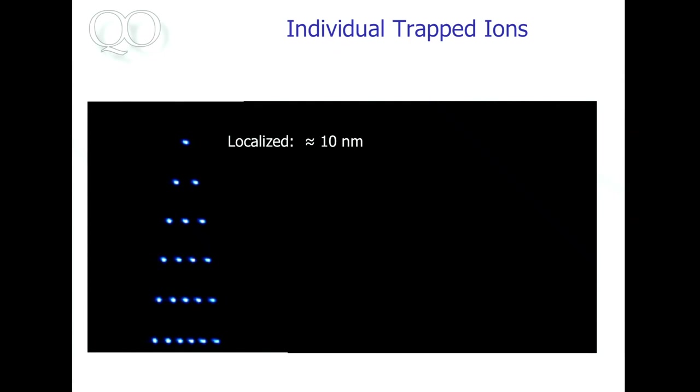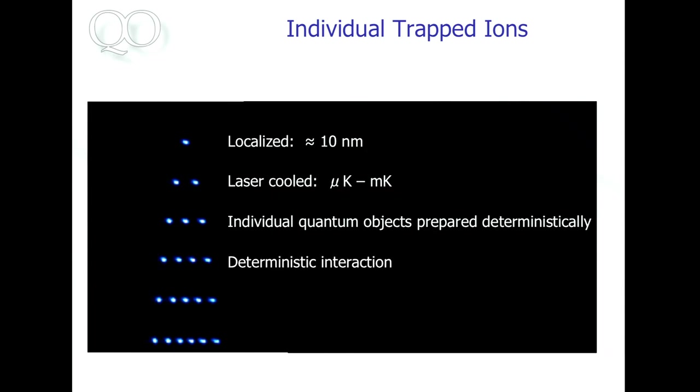And of course, all this work relied on the seminal work of Wolfgang Paul, who invented these Paul traps that were used for the experiments that I showed you. So now, today, we are at today's state of the art, basically. So individual trapped ions, they are very well localized in space. So they don't move around anymore. Typical localization is a few nanometers.